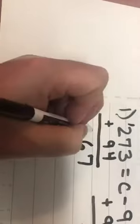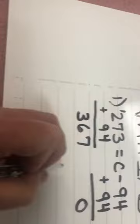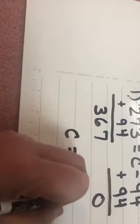3 plus 4 is 7. 7 plus 9 is 16. Put the 6 down, carry the 1. 1 plus 2 is 3. I find that c equals 367.